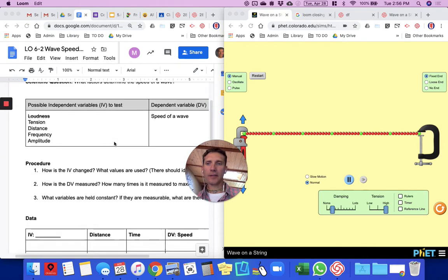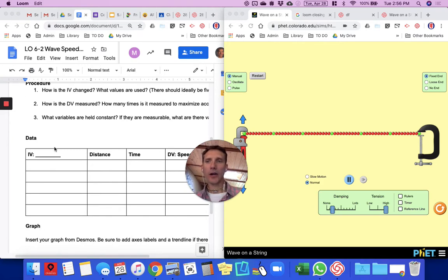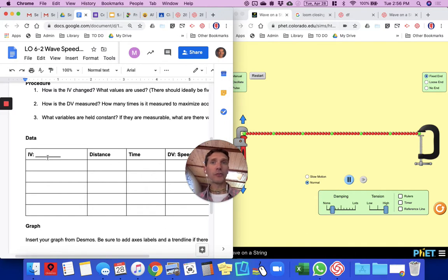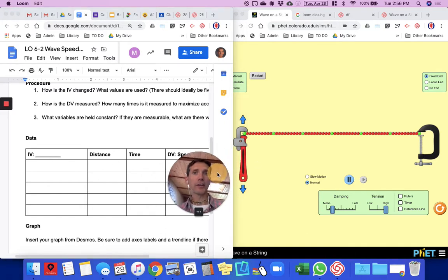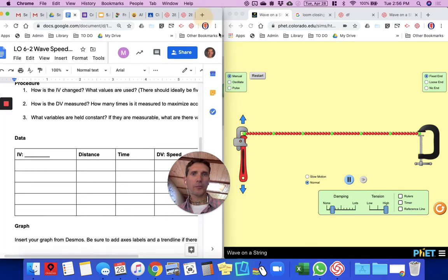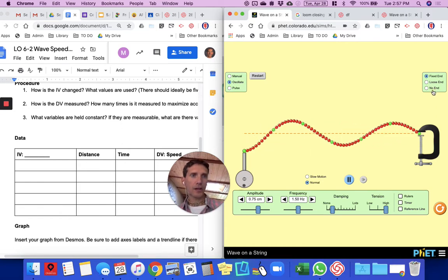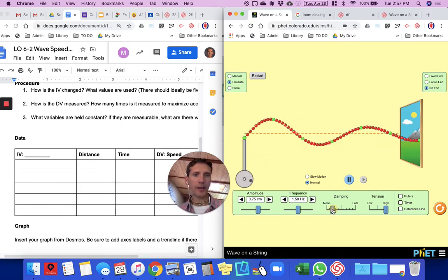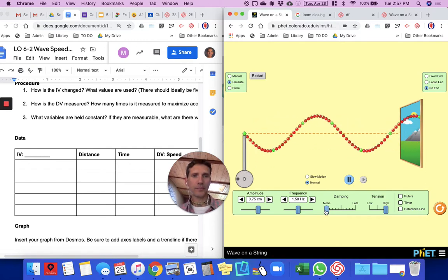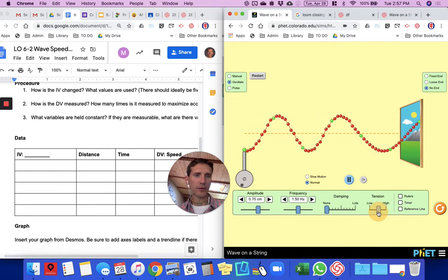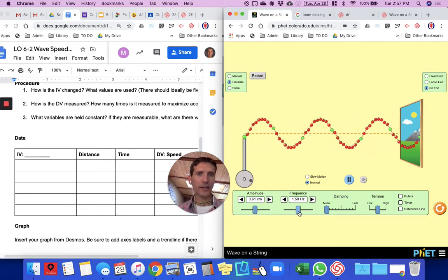In this document, I gave you a data table. I want to show you how you can go about measuring speed as the dependent variable. Your independent variable will be whatever you choose to investigate. I'll first make a suggestion that you set this to oscillate, no end. If you turn off damping, it'll be easier to see the waves. I can put tension in the middle if I want a baseline, everything kind of in the middle as a nice starting point.